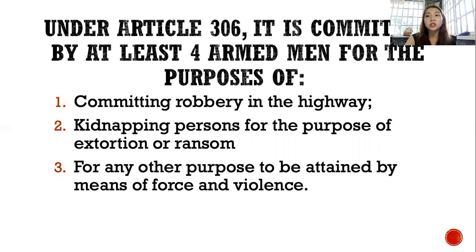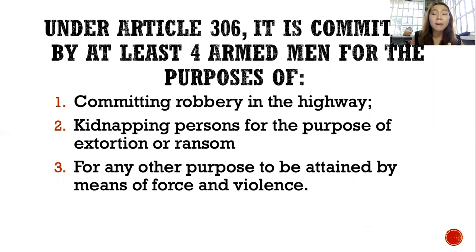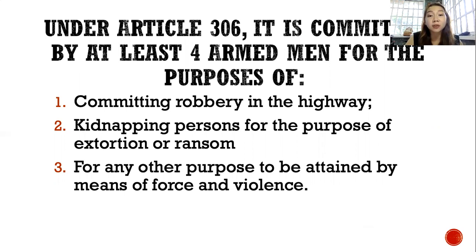What is the difference between brigandage in Article 306 and brigandage in PD 532? In Article 306, it requires that there must be at least four armed men. In PD 532, there is no requirement as to the number of perpetrators — even a single person can commit brigandage. In Article 306, the mere formation of a band of robbers for any of the mentioned purposes will constitute the crime already. While in PD 532, there must be an actual commission of the crime, or no crime will arise.